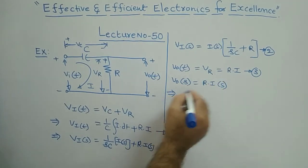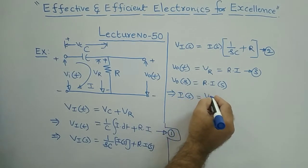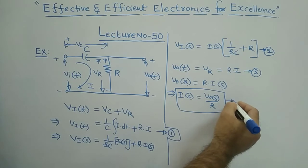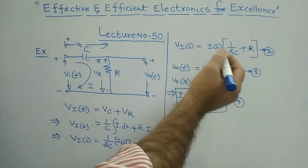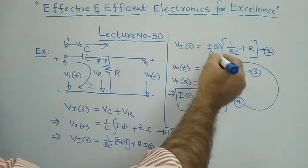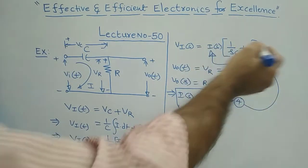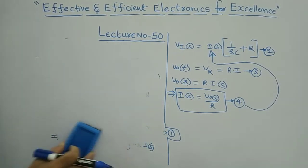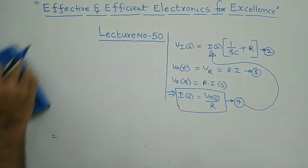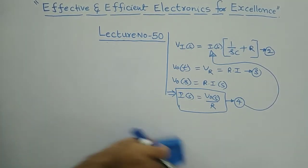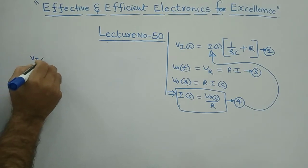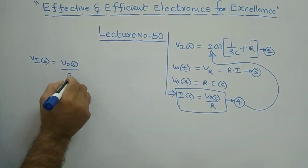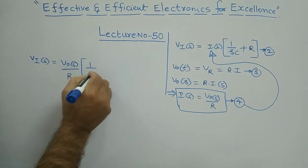From the output expression, I(s) = V_naught(s)/R. This is equation number four. Substituting this I(s) value into equation number two: V_i(s) = (V_naught(s)/R)·(1/sC + R), which gives V_i(s) = V_naught(s)/R · (1/sC + R).